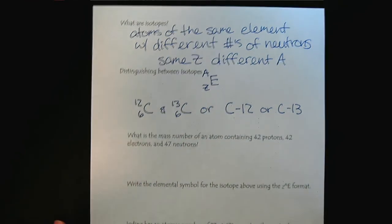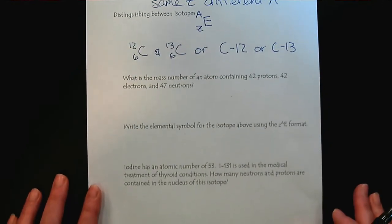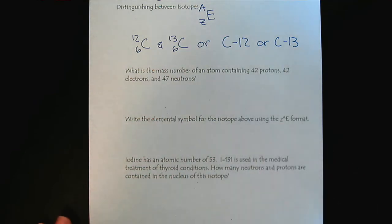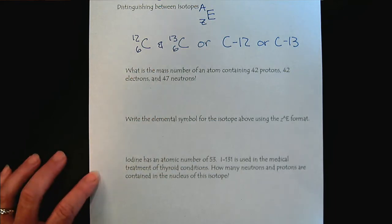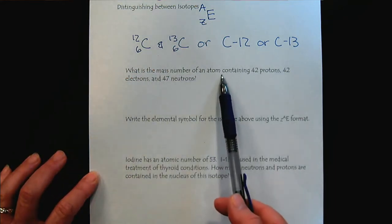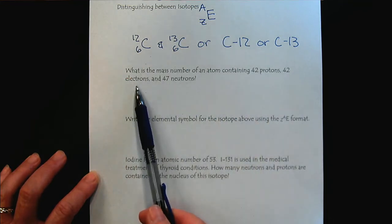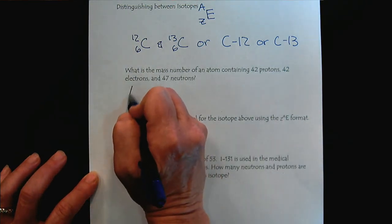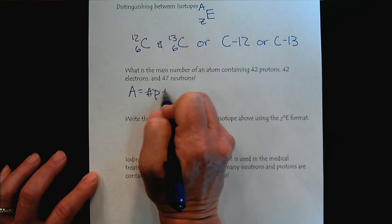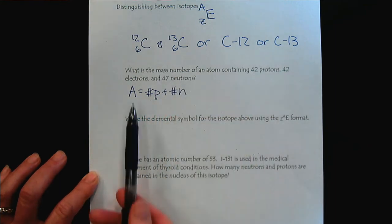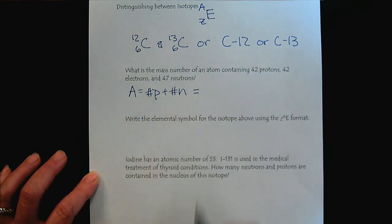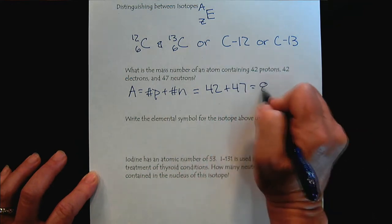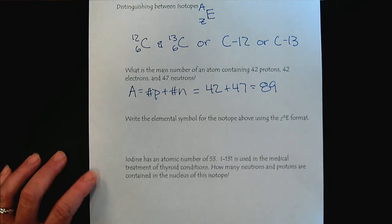Let's have a couple practice questions now to make sure that you're comfortable with how we describe atoms, the language, and how to write the symbols for various isotopes. This first question here. What is the mass number of an atom containing 42 protons, 42 electrons, and 47 neutrons? We have to remember that the mass number is A, the number of protons plus neutrons. So we've been given some information that we really don't need. The electrons don't come into play. So 42 plus 47 would give us 89 as the mass number.